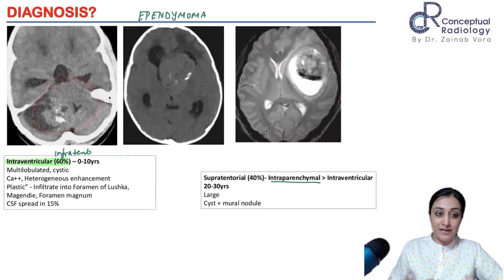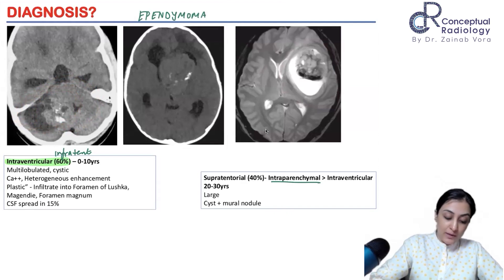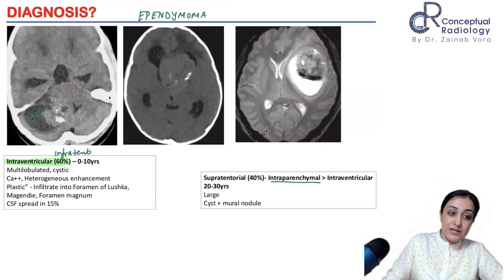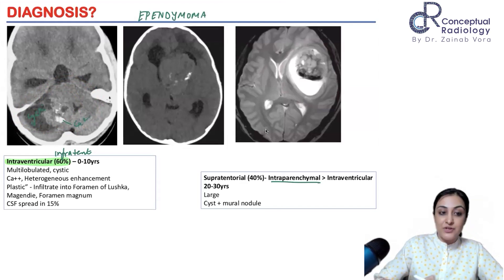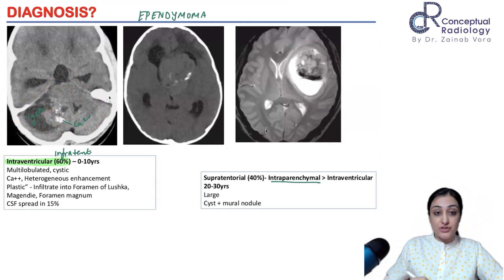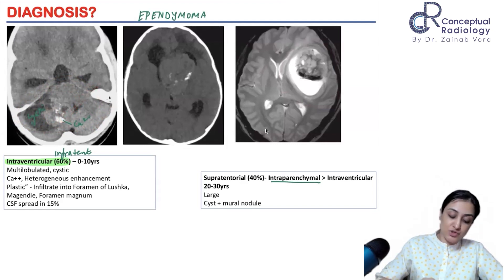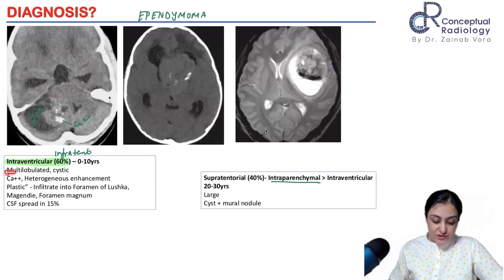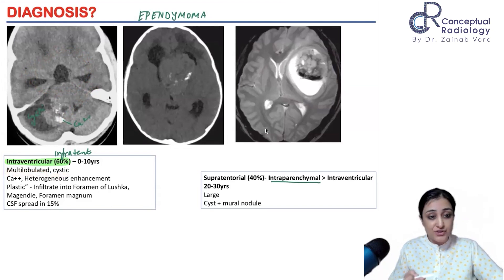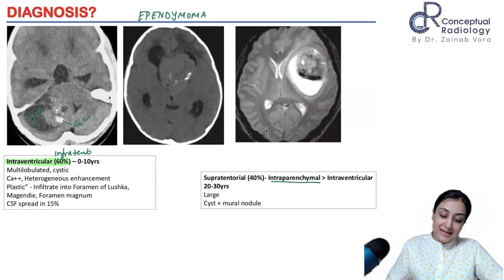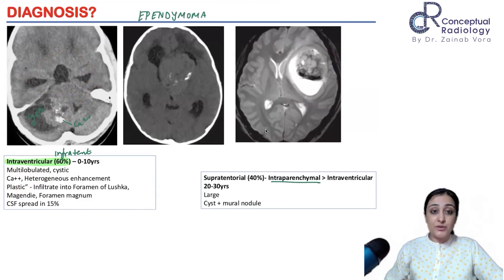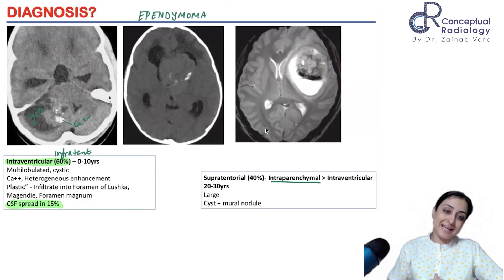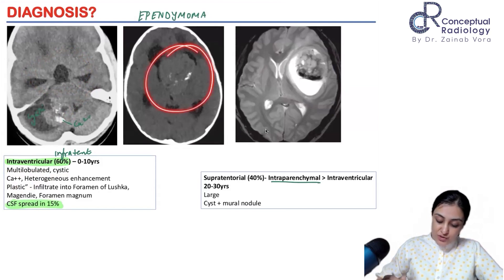Looking at the classical hallmarks on imaging: you can see a very heterogeneous mass lesion with cystic spaces, foci of calcification, and it is hyperdense compared to the cerebellum suggesting hemorrhage. There is mass effect and upstream hydrocephalus. Features include multi-lobulated cystic areas, calcification, and heterogeneity. The tumor is plastic and can infiltrate. Full craniospinal axis imaging must always be done as CSF spread occurs in around 15%, also seen in medulloblastoma.